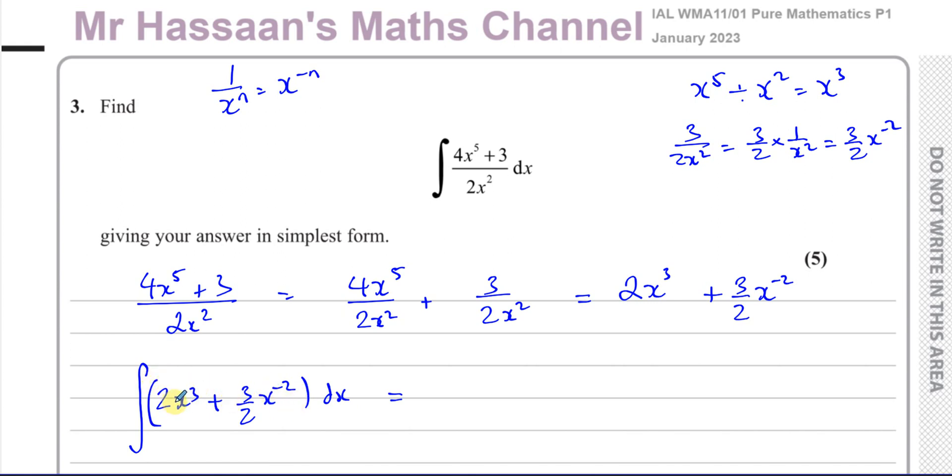Now I can integrate this very easily and it's like we're integrating each term separately. Okay, integrating the first term and then the second term separately. We don't write down integral of 2x cubed with respect to x plus the integral of 3x to the power of minus 2 with respect to x. We don't have to do that, but we just integrate each term separately.